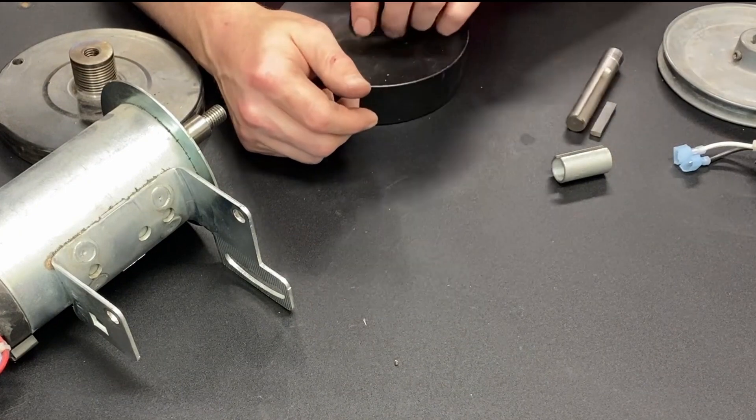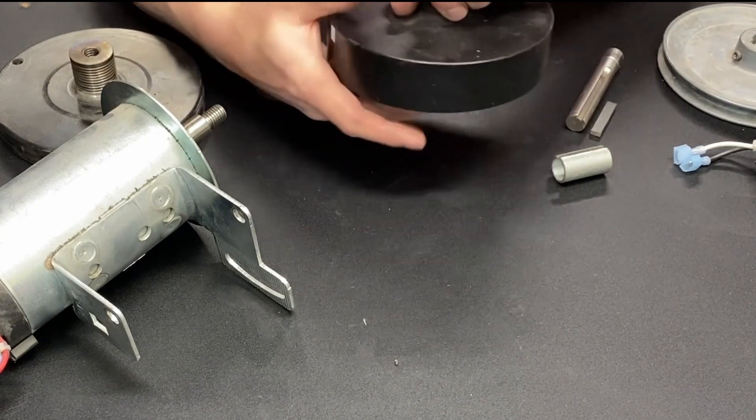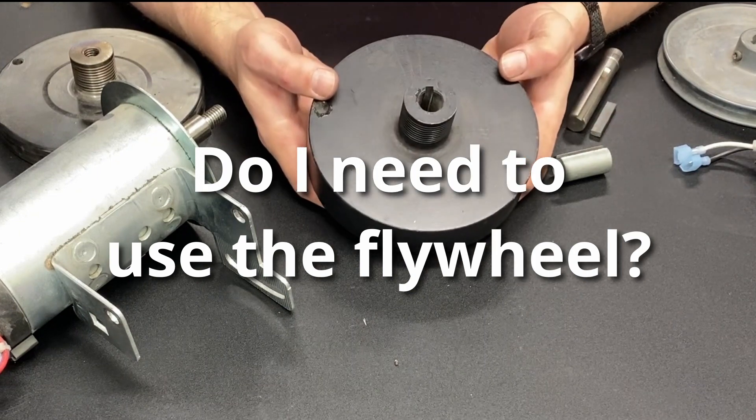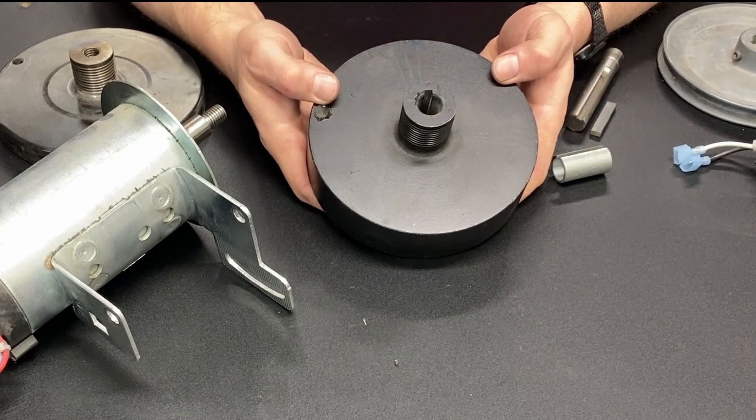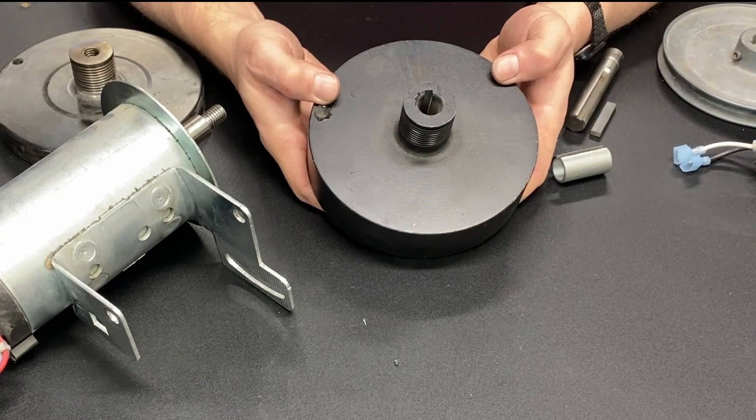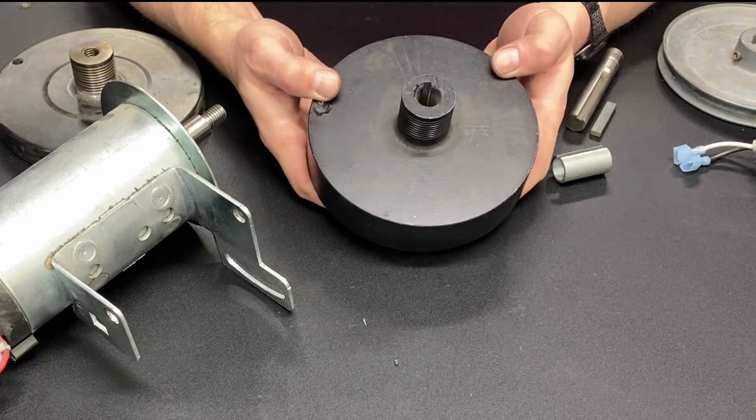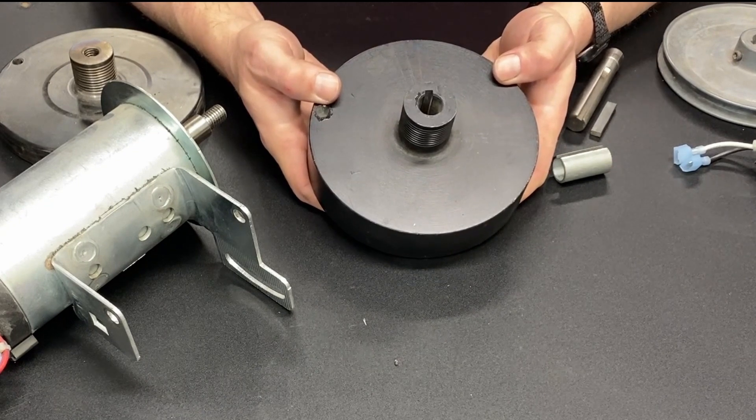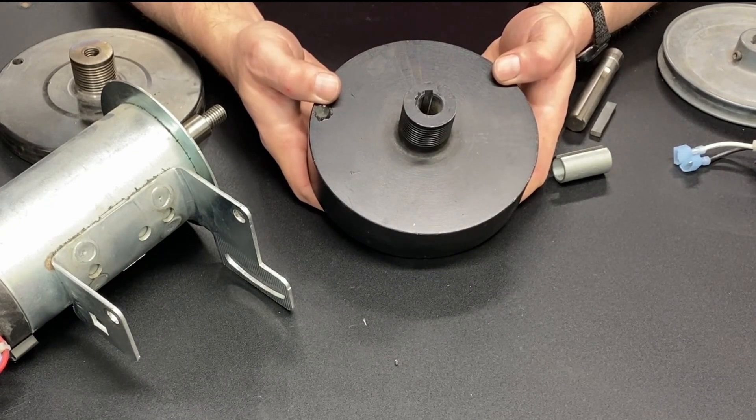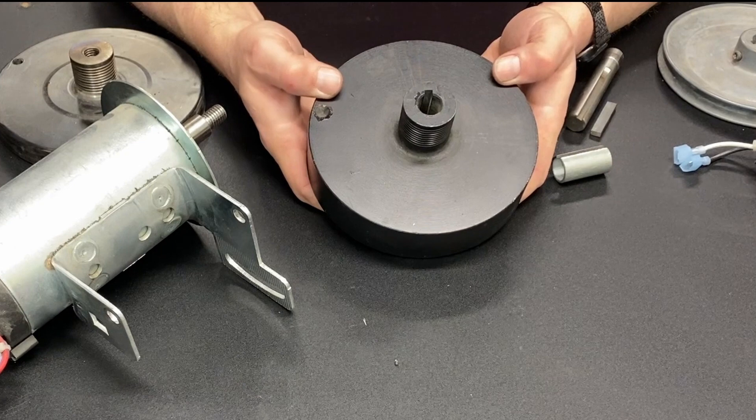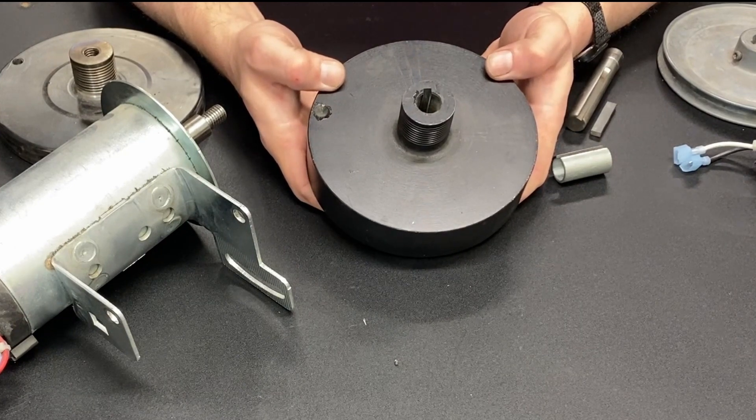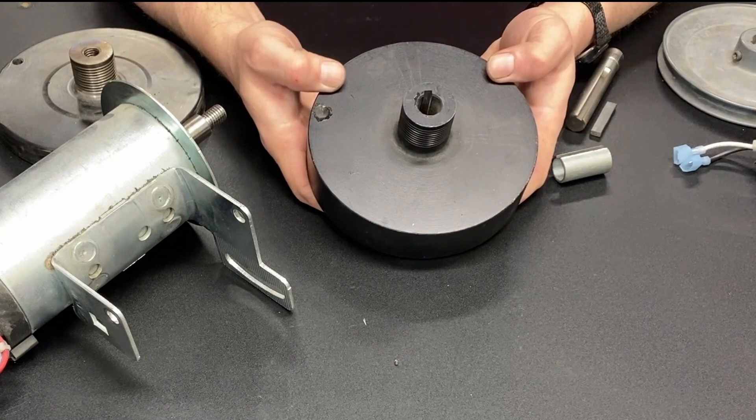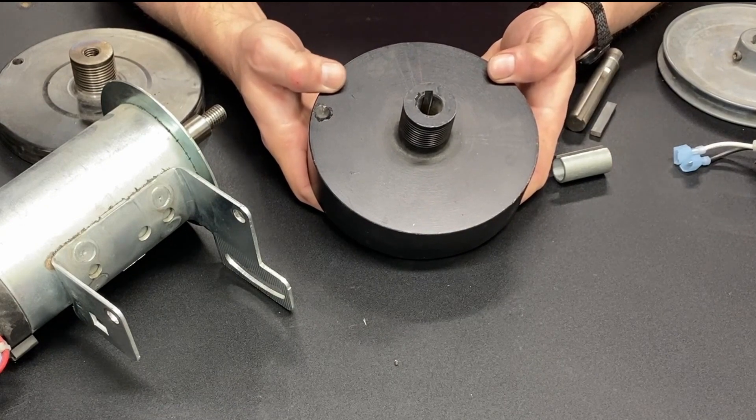I get this question a lot: do I need to use the flywheel that comes with the motor? Maybe. It really depends on your setup. It depends on if you want that extra mass for kinetic energy, if you can easily modify things to fit the pulley you want to run onto your motor, and how your motor flywheel setup is designed.